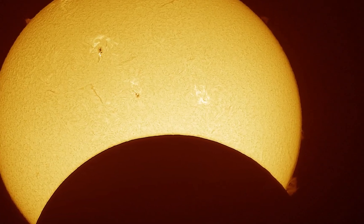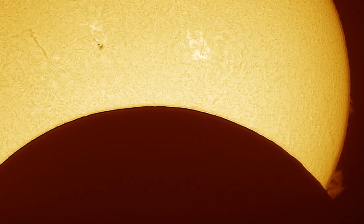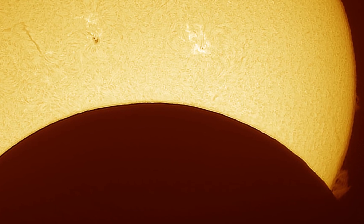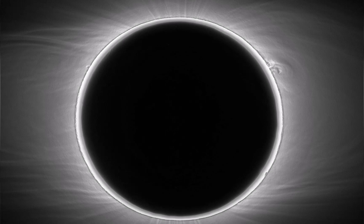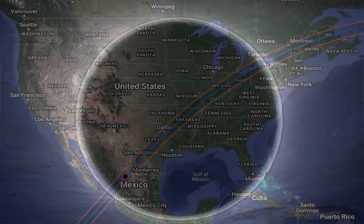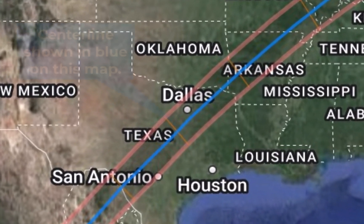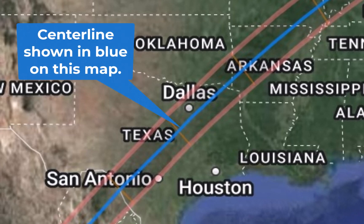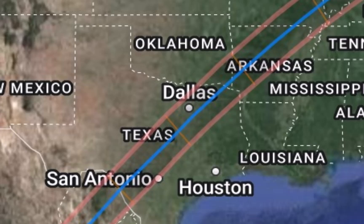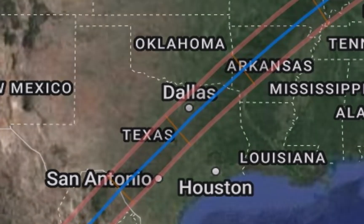Now partial eclipses can be fun, but they aren't going to blow your mind. The difference between totality and a sun that's 99.9% eclipsed is still literally the difference between night and day. So get into that shaded region on the map. If at all possible, you want to get close to the center line — smack in the middle of the eclipse's path. Everywhere in the path of totality will get to see the total solar eclipse, but the total phase will last longer the closer you get to the center line.